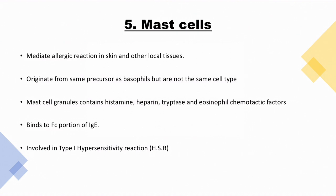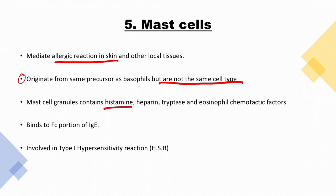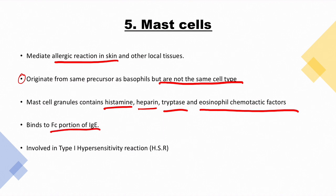Mast cells mediate allergic reactions in skin and other local tissues. They originate from the same precursor as basophils but are not the same cell type. Mast cell granules contain histamine — a vasoactive amine that causes bronchoconstriction and vasodilation — as well as heparin, tryptase, and eosinophil chemotactic factors. Mast cells bind the Fc portion of IgE, which leads to degranulation.